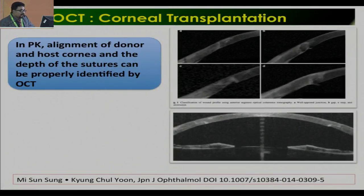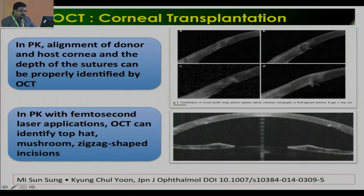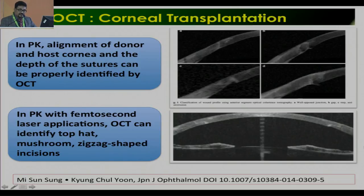In corneal transplantation: in PK, alignment of the donor-host corneal junction and the depth of sutures can be properly identified by OCT. We can see the graft-host junction is well-opposed, or where there is a gap, step formation, or protrusion. In PK with femtosecond laser, we can appreciate mushroom or zigzag-shaped cuts in the anterior segment OCT.